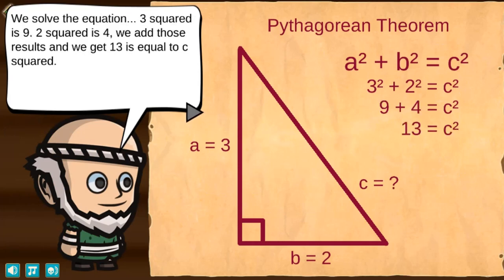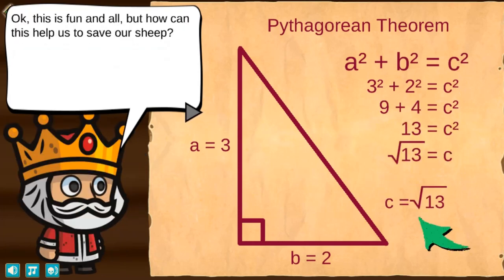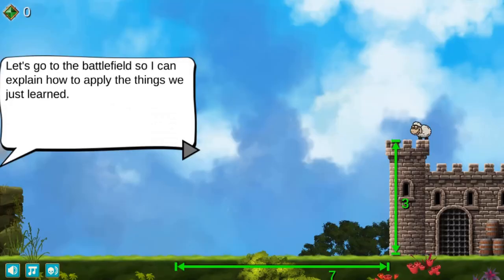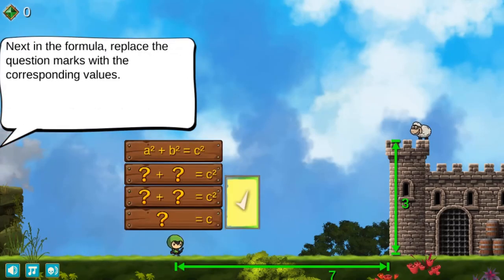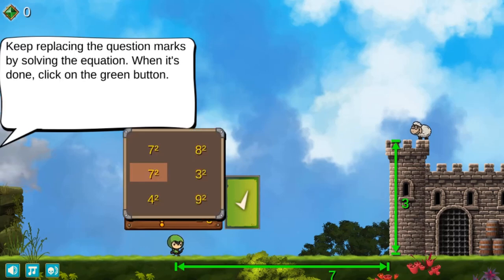Orcs have stolen sheep from King Rupert, and your goal in this game is to help rescue them. Use your knowledge of Pythagoras to determine how to shoot the arrow or place the ladder against the castle wall.